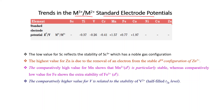Now, the trends in M3+/M2+ standard electrode potentials. This table gives values from titanium to cobalt; scandium and zinc values are not given but can be predicted. For scandium, the low value reflects the stability of Sc3+, which has a noble gas configuration. A low value means M3+ will not easily convert to M2+, i.e., M3+ is more stable.